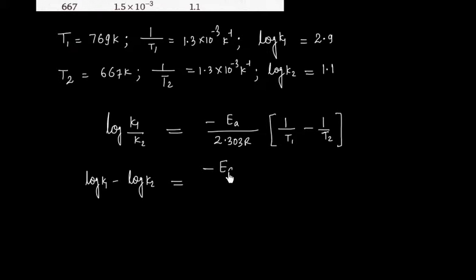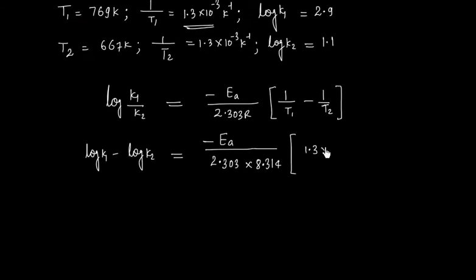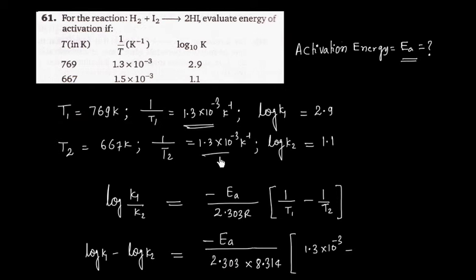1 by T1 is equal to minus Ea by 2.303R. 1 by T1 is given, 1 by T2 is also given. That is basically 1.5.